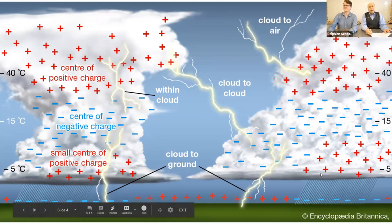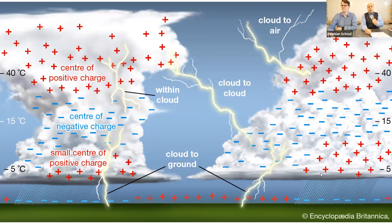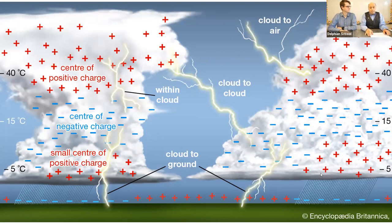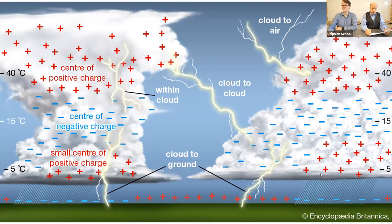The funny thing about lightning is it's only about as wide as your finger — that's how wide it is. But it's very, very hot. It actually heats up the air around it when it goes through. This electricity, when it jumps from the cloud to the earth, heats up the air around it.